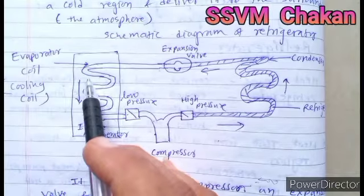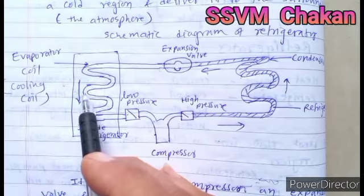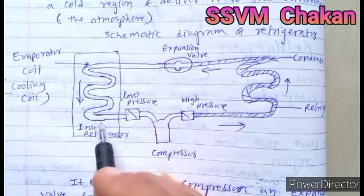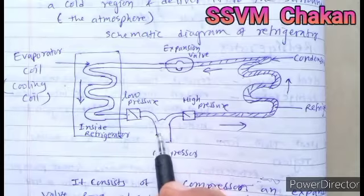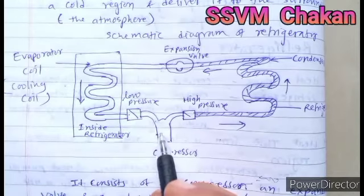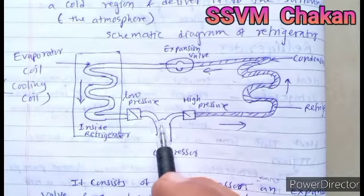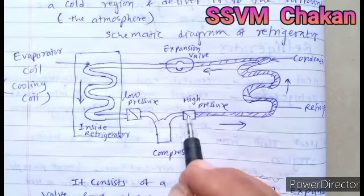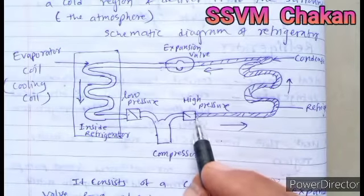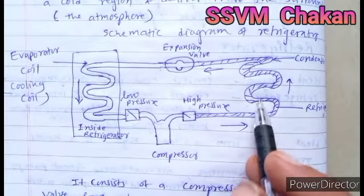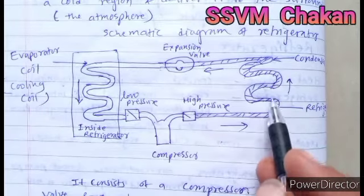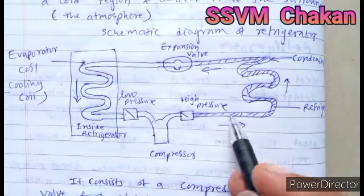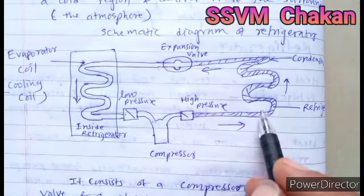As this gas absorbs heat from the inside, all substances present inside the refrigerator have their temperature slightly increasing. The gas then reaches the compressor, which compresses this gaseous-state refrigerant. As it is compressed, pressure increases and temperature also increases. It then passes through the condenser coil. As its temperature is larger than the atmospheric temperature, it releases heat into the atmosphere and starts cooling, converting back to liquid state.